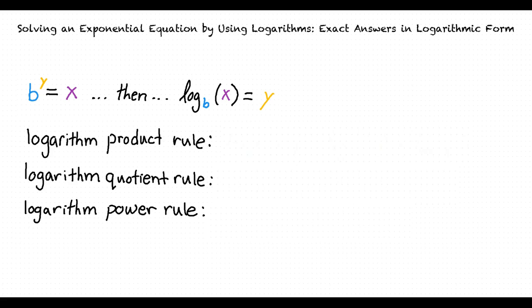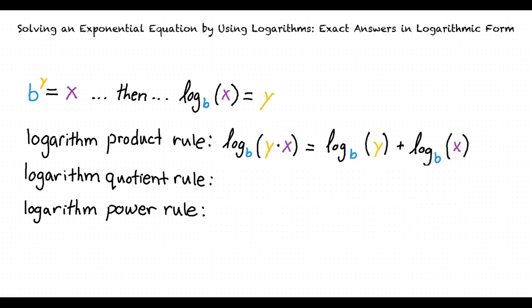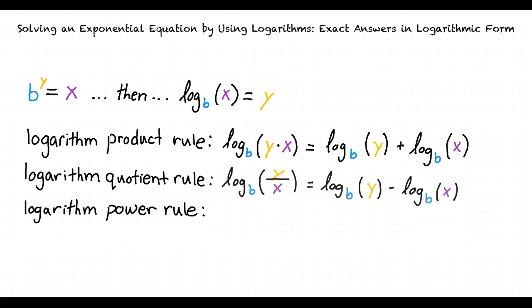The logarithm product rule says that the base b logarithm of y times x is equal to the base b logarithm of y plus the base b logarithm of x. The logarithm quotient rule says that the base b logarithm of y divided by x is equal to the base b logarithm of y minus the base b logarithm of x. The logarithm power rule says that the base b logarithm of y to the x power is equal to x times the base b logarithm of y. We can use these rules to rewrite exponential equations in different forms that make it easier to solve for unknown variables.